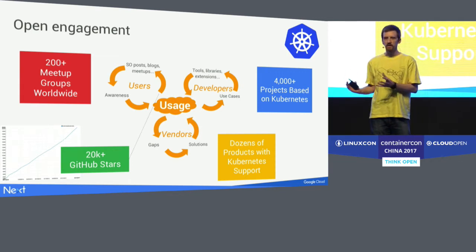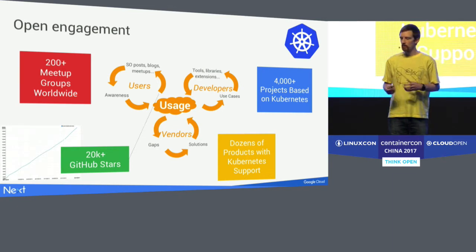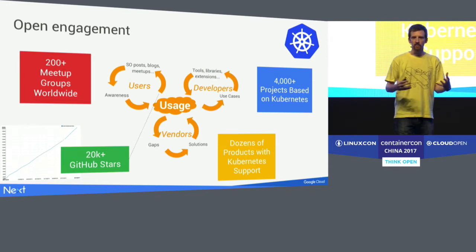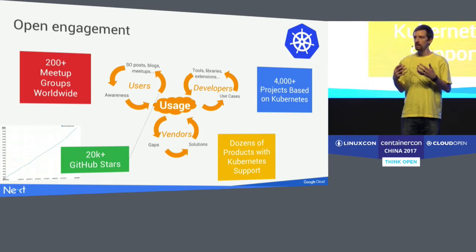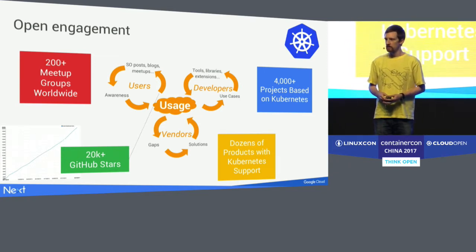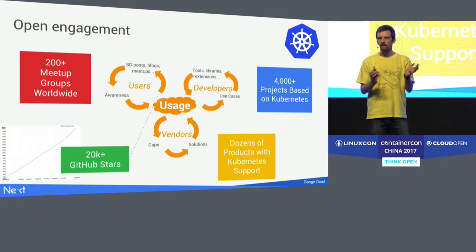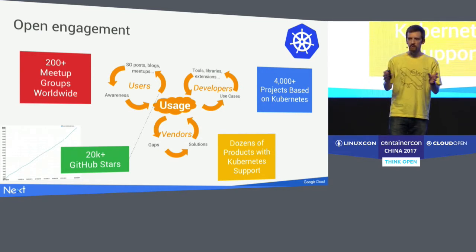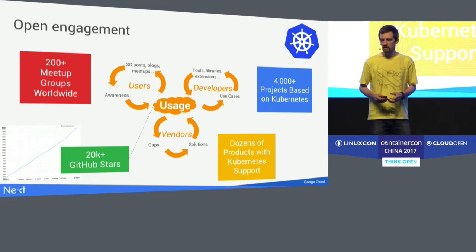Where users and developers in the wider community are not able to fill a particular need, we work with vendors and other companies to essentially plug the holes where Kubernetes is weak — things like providing support, providing ways of developing, and starting new clusters easily. This ecosystem of end users, developers, and vendors creates a virtuous cycle that allows us to grow the community and create a much more robust project.